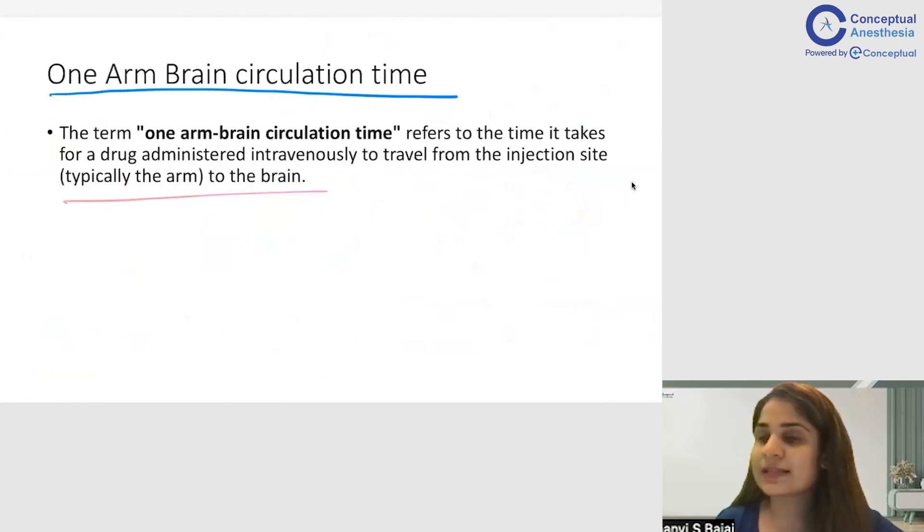So the next thing they will ask you is, tell me how much is the typical one arm brain circulation time? So typically one arm brain circulation time is very less, from the time you give your drug IV till the time it acts on the brain. It takes not more than 20 to 30 seconds and this is the time that is required to produce unconsciousness in the patient once you inject the drug into the blood vessel. So you should know this concept of one arm brain circulation time.